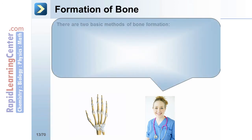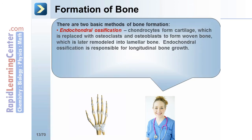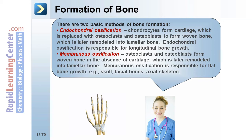There are two basic methods of bone formation. The first is endochondral ossification, in which chondrocytes form cartilage, which is replaced by osteoclasts and osteoblasts to form woven bone, which is later remodeled into lamellar bone. Endochondral ossification is responsible for longitudinal bone growth. The second method is membranous ossification, in which osteoclasts and osteoblasts form woven bone in the absence of cartilage, later remodeled into lamellar bone. Membranous ossification is responsible for flat bone growth, such as the skull, facial bones, and axial skeleton.